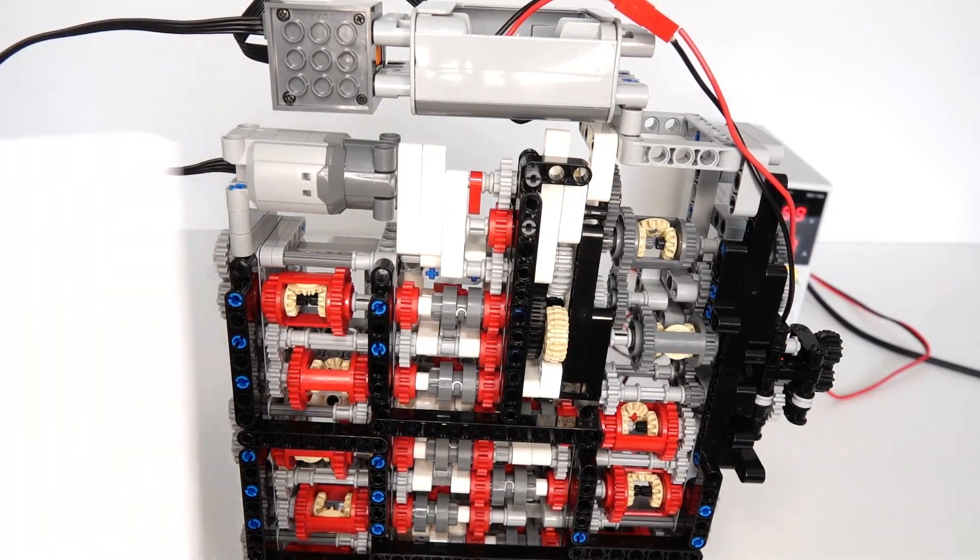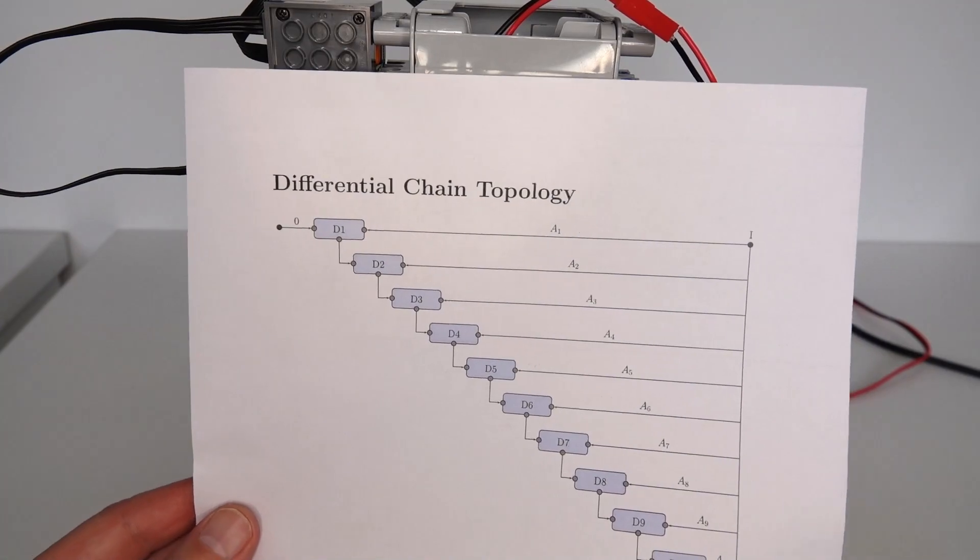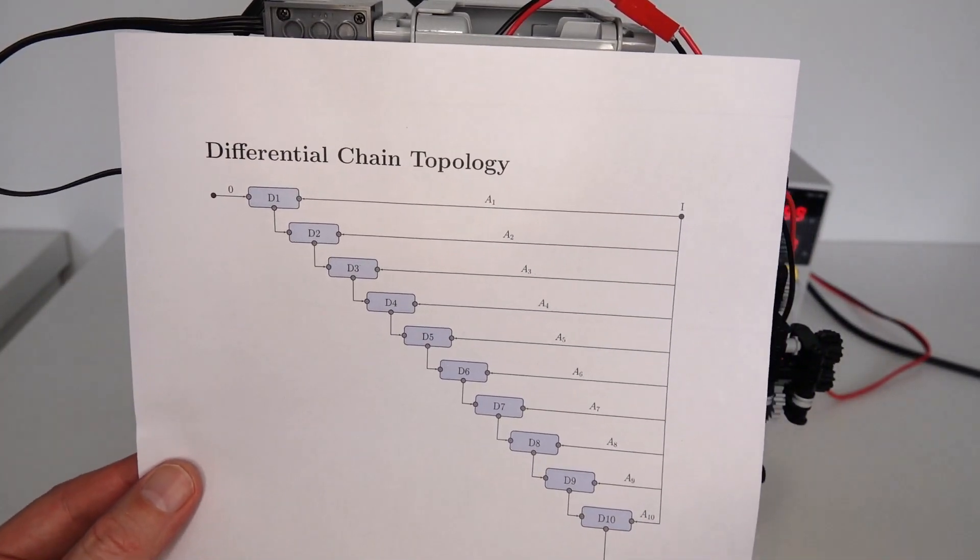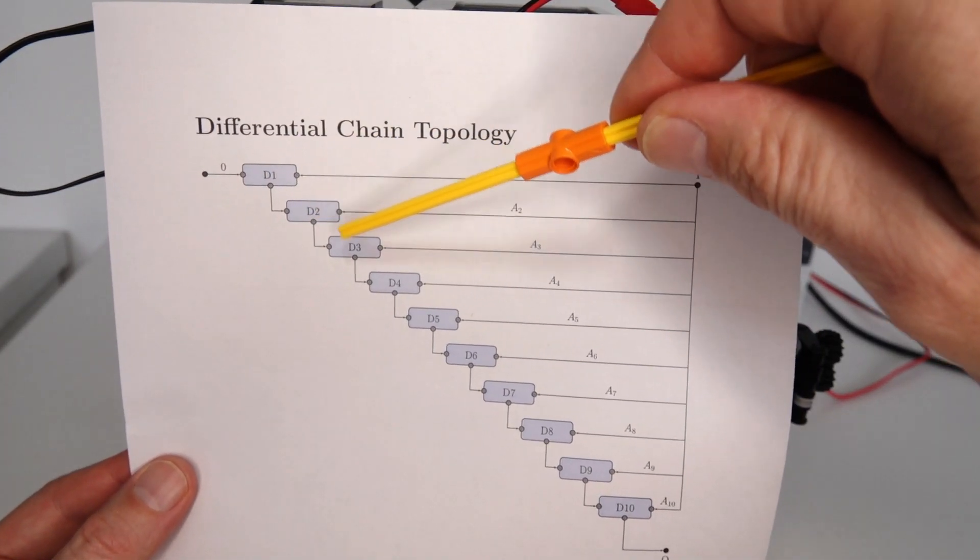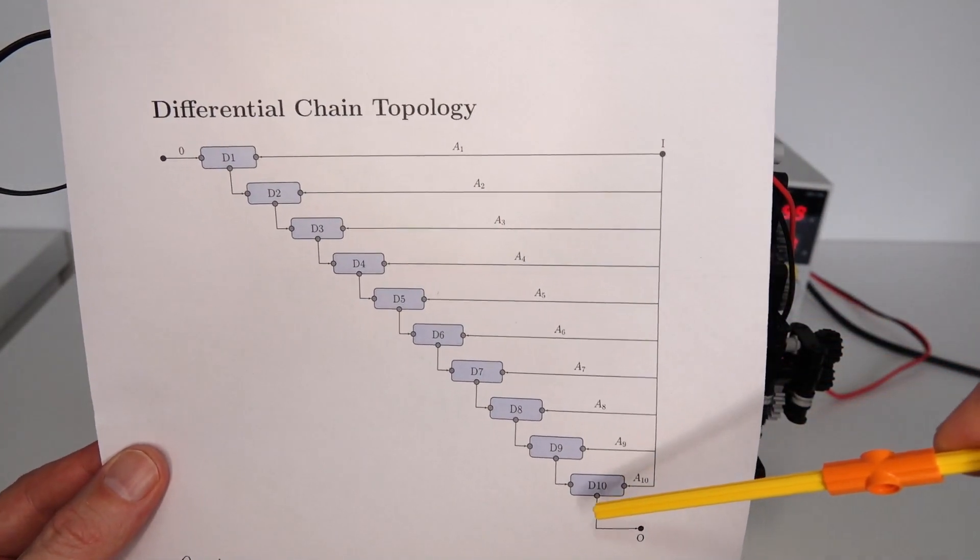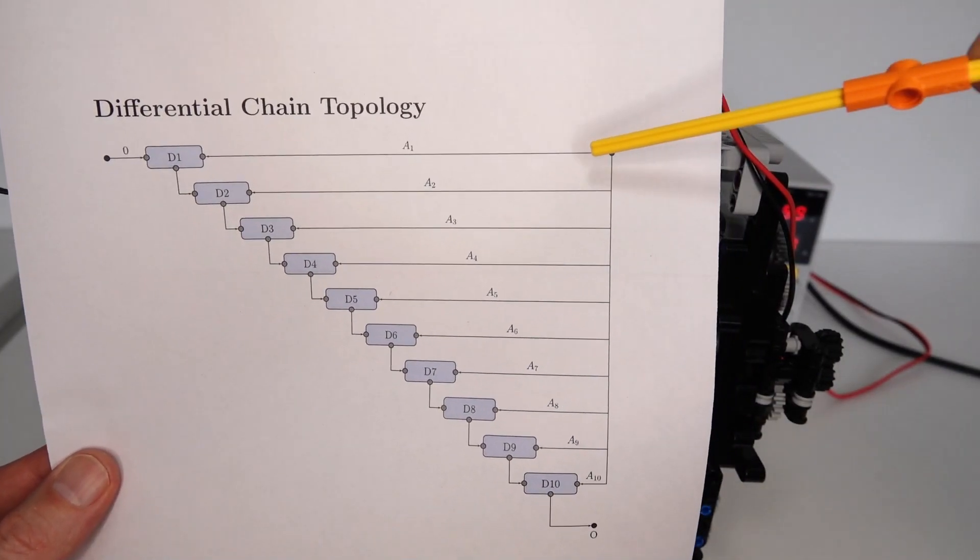If you're interested in the mathematics behind this design, I've got here a diagram representing the differential gearing system. So what we've got up here is differential 1, 2, 3, all the way up to 10, represented by these blue boxes.